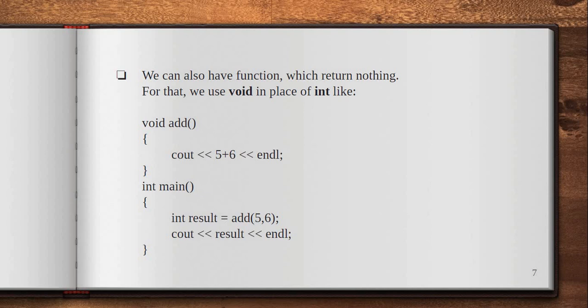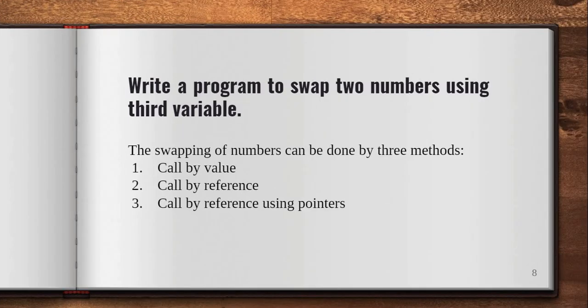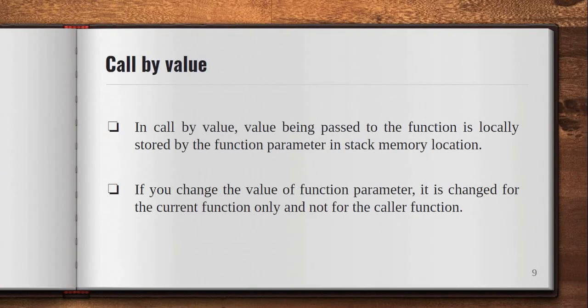Now let's jump to writing a C++ program to swap two numbers using a third variable. The swapping of numbers can be done by three methods, so let's understand them one by one. In call by value, the value being passed to the function is locally stored by the function parameter in stack memory. If you change the value of the function parameter, it is changed for the current function only and not for the caller function.